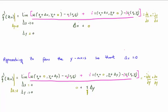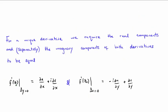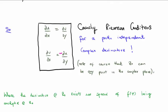Now, in order for the differentiation of a complex number to make any sense, we know the direction in which we approach the complex number shouldn't make any difference. This means these two expressions must be equal. For a unique derivative, we require that the real components and separately the imaginary components of both derivatives are equal. Setting del u del x equal to del v del y, and del v del x equal to negative del u del y — these are the Cauchy-Riemann conditions, the conditions for a path-independent complex derivative.